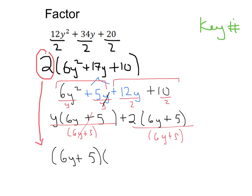When I divide each of these terms by 6y plus 5, divide this by 6y plus 5, in my first term over here I'm just going to be left with a y.